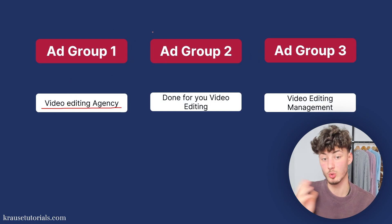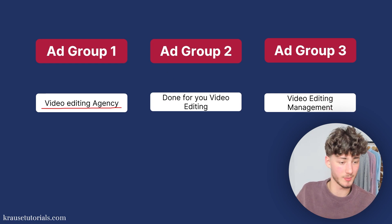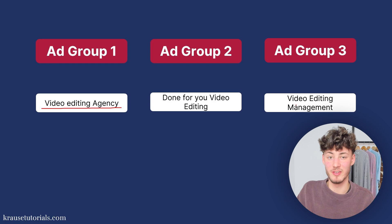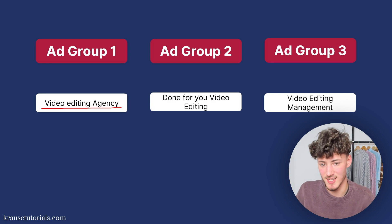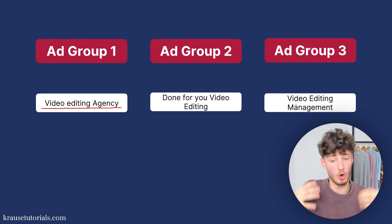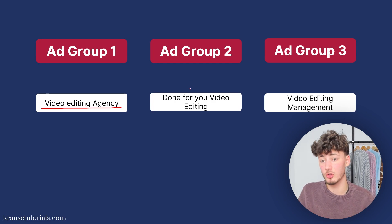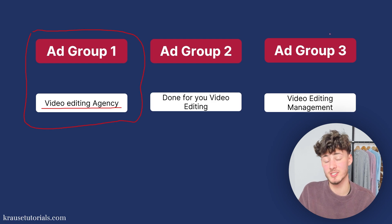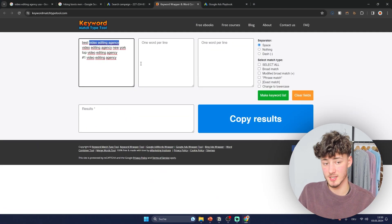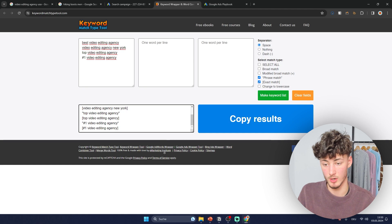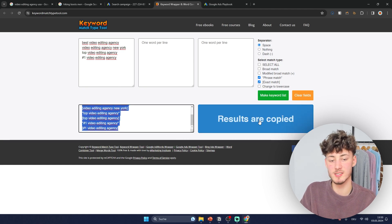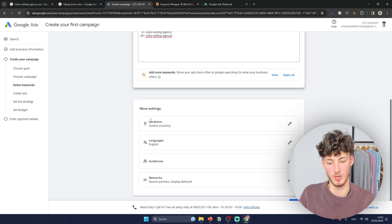For example, create one ad group for 'video editing agency,' then duplicate it and change it to 'done for you video editing' or 'video editing management.' Although they seem like the same meaning, you'll find that one ad group outperforms the others, which also results in you paying less per customer. Click on phrase match and exact match, then click make keyword list, and paste the resulting keyword list into Google Ads.